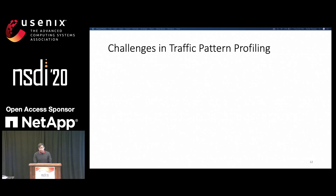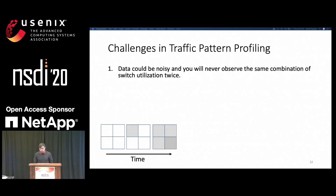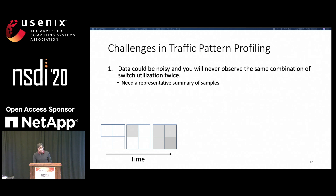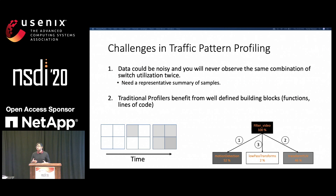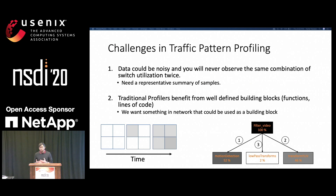The first challenge is that network data is measured in real values and could be very noisy. In this example, we see that the first and second states are very similar, and we cannot possibly show all states, so we need a representative summary of values. Second, traditional profilers benefit from well-defined building blocks—we know which functions call which functions and we can easily create a hierarchy just by looking at the program. In networks, this is not the case; we want something in the network that can serve as a building block.